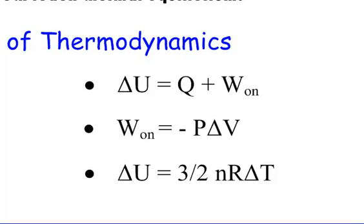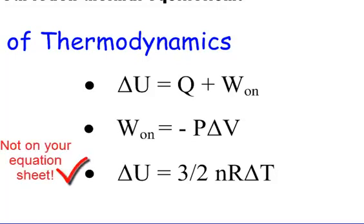Three-halves, N is the number of moles, R is the gas constant — which is 8.31 in physics, not the 0.0821 from chemistry — and delta T is the change in temperature in Kelvin. The first and second equations are on your equation sheet, but this last equation, delta U equals three-halves NR delta T, is not — so you might want to add it.